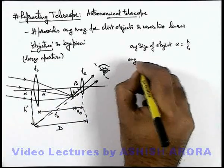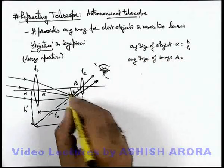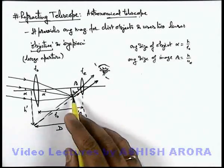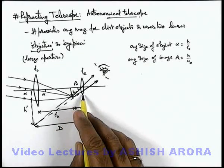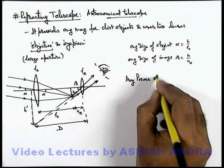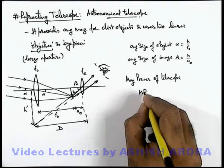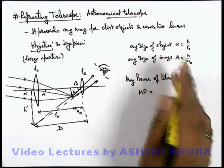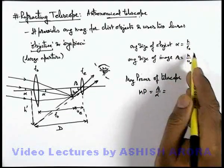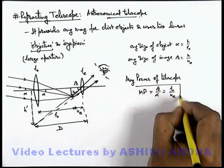If we calculate the angular size of image, this must be beta and the value of beta we can calculate from this triangle as h over u_e, where u is the distance of intermediate image from the eyepiece lens. Magnifying power of telescope, if we calculate, can be written as angular size of image by angular size of object, which is beta by alpha. If we substitute the value of beta and alpha here, h gets cancelled out and the value we are getting is f_o by u_e. We must be very careful that u_e we can easily obtain by using lens formula for eyepiece lens.